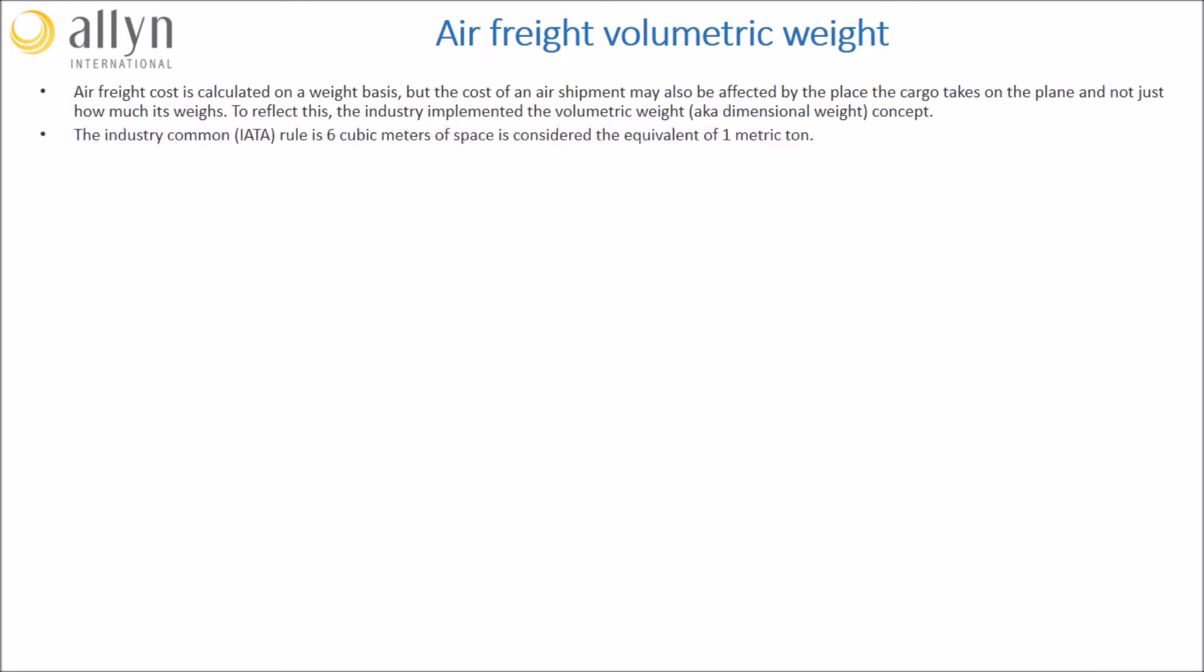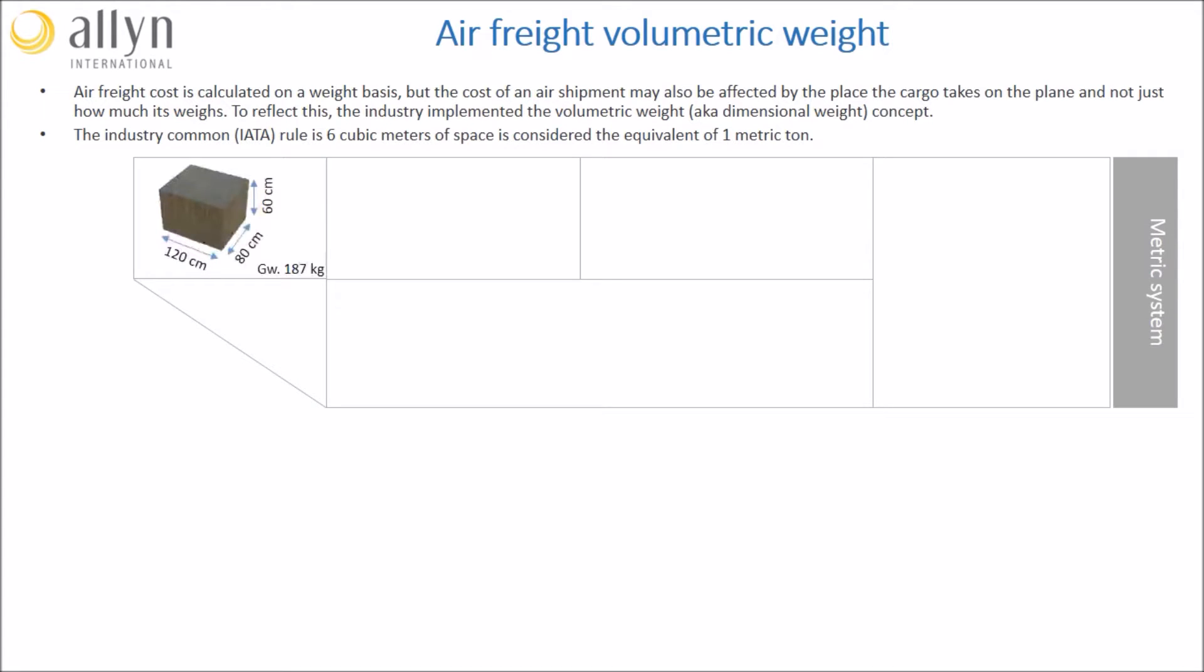The industry common rule says that 6 cubic meters of space are considered the equivalent of one metric ton. We will now look at a couple of scenarios and calculation methodologies to help understand this concept. In our following example, we want to send by air a case which is 120 cm long, 80 wide, and 60 cm high.